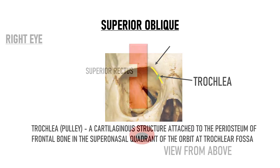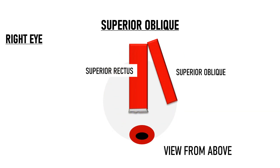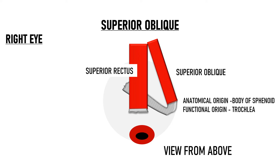The superior oblique changes direction at the trochlea. Before reaching the trochlea it was travelling forwards; then it takes a turn and starts travelling in the posterolateral direction. It passes beneath the superior rectus muscle and inserts into the sclera. Although the anatomical origin of the superior oblique is the body of the sphenoid at the orbital apex, its functional origin is considered to be the trochlea, because all of its actions are along the axis after it has changed direction there.